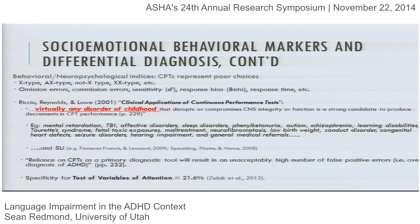Many continuous performance measures use numbers and letters as stimuli, which could be problematic for kids with language or reading problems. There is one continuous performance measure that does not use numbers or letters — the Test of Variables of Attention — but its specificity rate is only 22%.